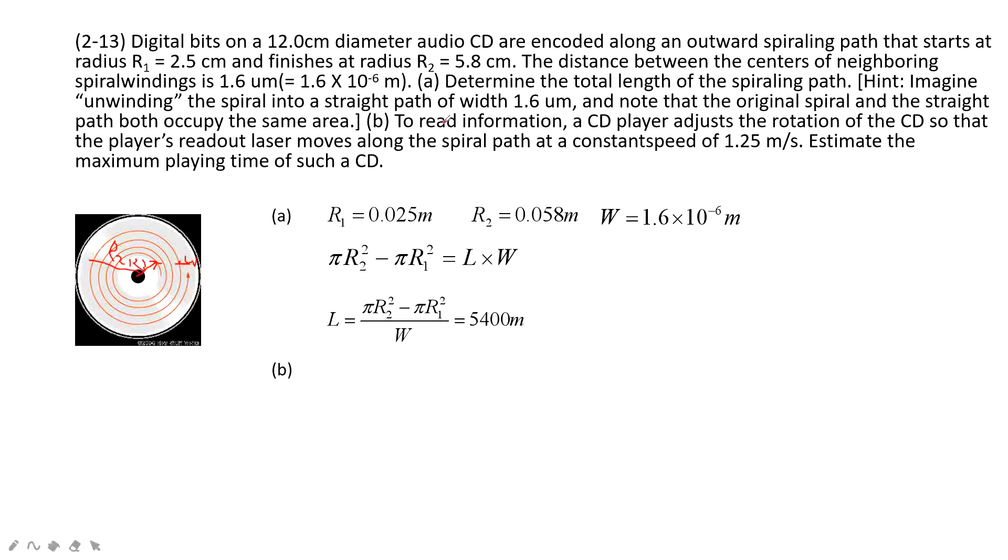The second problem asks us, this CD player reads information at a constant speed 1.25 meters per second. And ask us how much time to play these CDs. So we can see the total length for this one is 5400 meters on the CD. And then the velocity is 1.25 meters per second. So very easily we can get the time taking is the length, the distance divided by speed, we get the time taking is 4320 seconds.